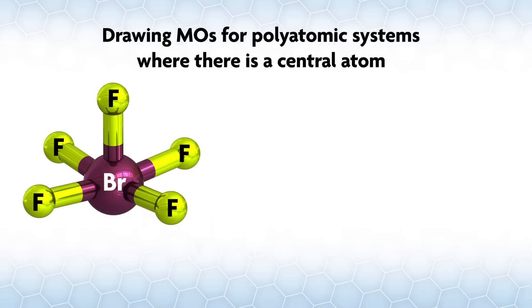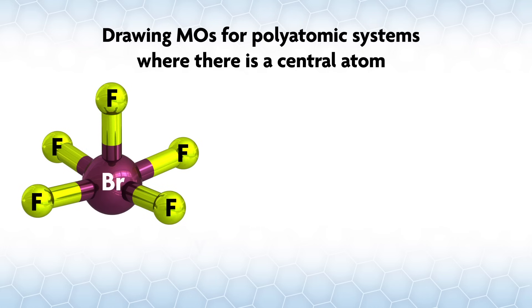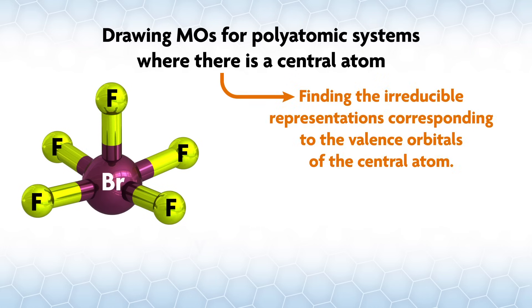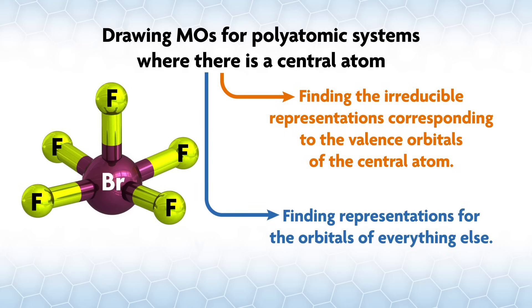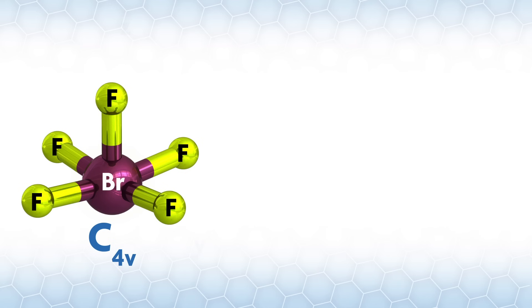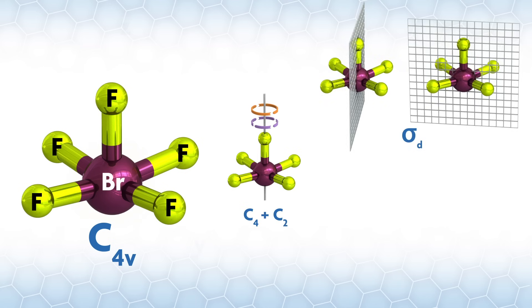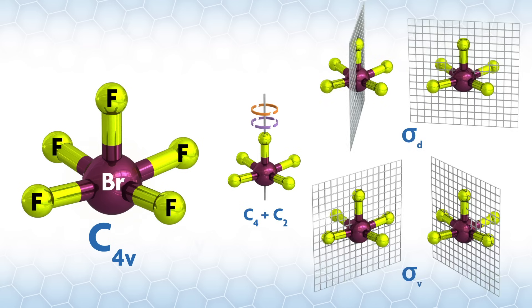We divide the problem of drawing MOs for polyatomic systems where there is a central atom into two parts: finding the irreducible representations corresponding to the valence orbitals of the central atom, and finding the representations for the orbitals of everything else. If you have a system with a central atom, then that central atom will sit on the point that all your symmetry operations go through. For example, bromine pentafluoride is C4v with C4 axes, a C2, two sigma d, and two sigma v planes, and all those symmetry operations go through the bromine.